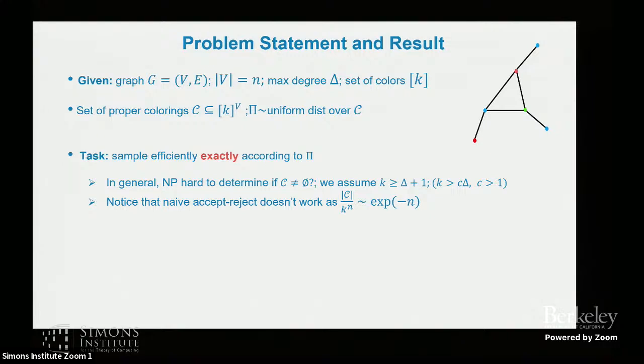So we typically work in a regime where we know that things are easy, like k is greater than delta plus one, so we know greedy coloring will work. And a naive accept-reject sampling will not work because it would take too long. And our goal is to find the minimum value of C, assuming that k is more than C times delta, to find the minimum value of C such that we can design efficient sampling algorithms for this problem.